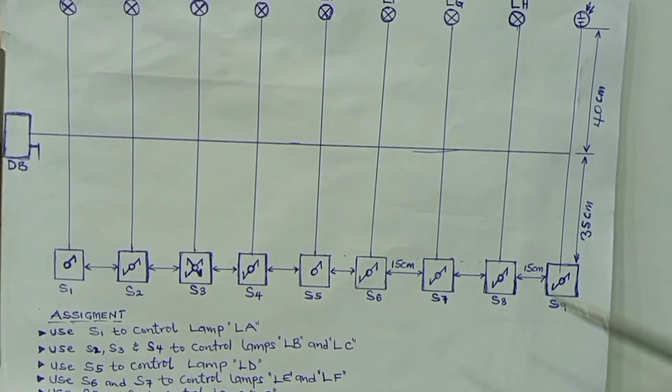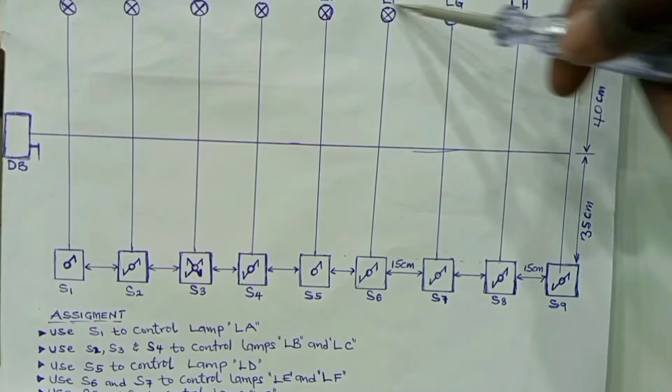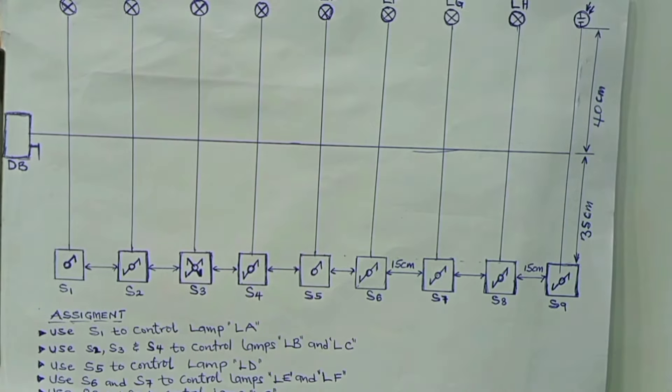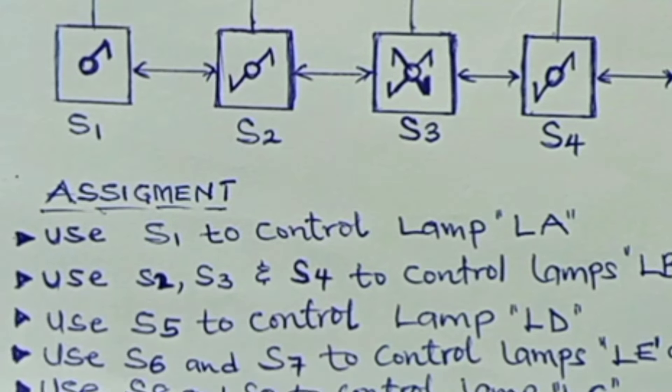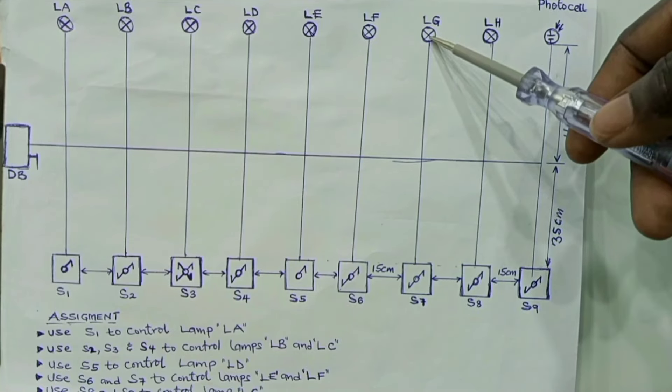So in that case, again, you have to be able to know how to wire two switches to control a lamp or a number of lamps. Then you use switch 8 and switch 9 to control lamp G.